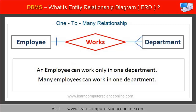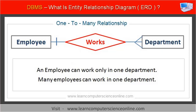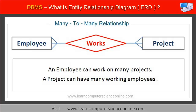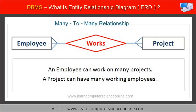In a one-to-many relationship, one instance of entity A can be associated with more than one instance of entity B. For example, an employee can work in only one department, but many employees can work in one department. In a many-to-many relationship, many instances of entity A can be associated with given instances of entity B, and many instances of entity B can be associated with given instances of entity A. For example, an employee can work on more than one project, and likewise, many employees can work on one project.